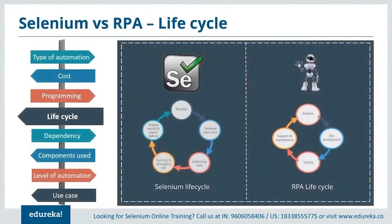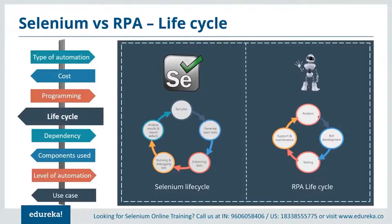What is their life cycle and how do they differ? The life cycle of Selenium is a little more complicated compared to RPA. Selenium deals with test planning, generating basic test cases, enhancing cases, running and debugging tests, and analyzing and reporting defects. Whereas RPA deals with just four processes: analysis, development, testing, and support and maintenance.